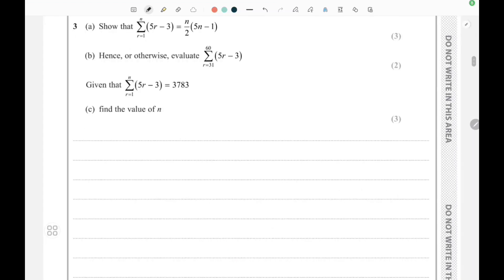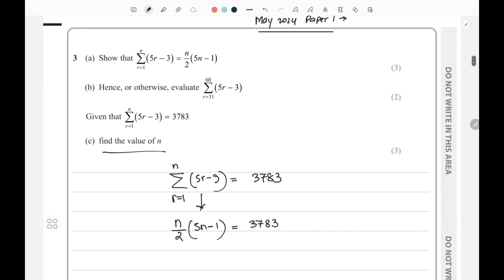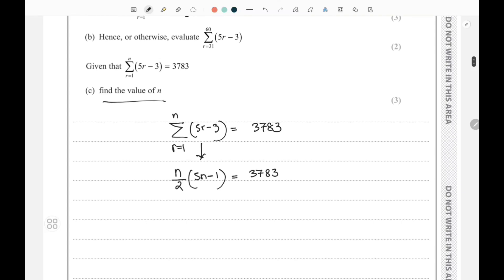The final part asks us to find the value of n. Summation r equals 1 to n of (5r - 3) equals 3783. We can say this is n by 2 times (5n - 1) equals 3783. So here I can write this as 5n squared minus n.